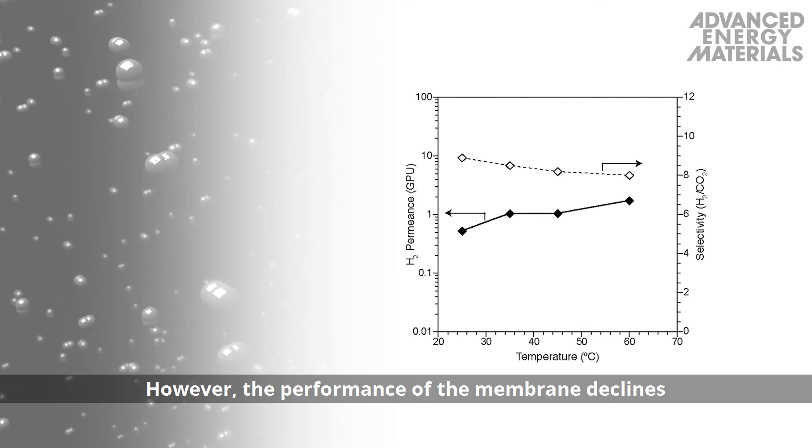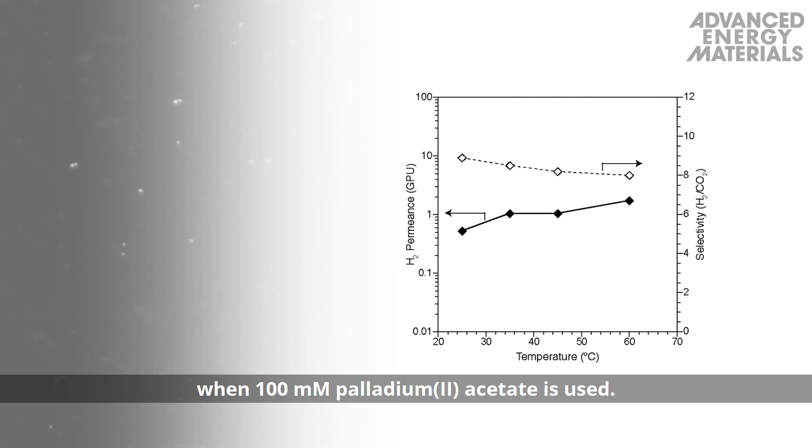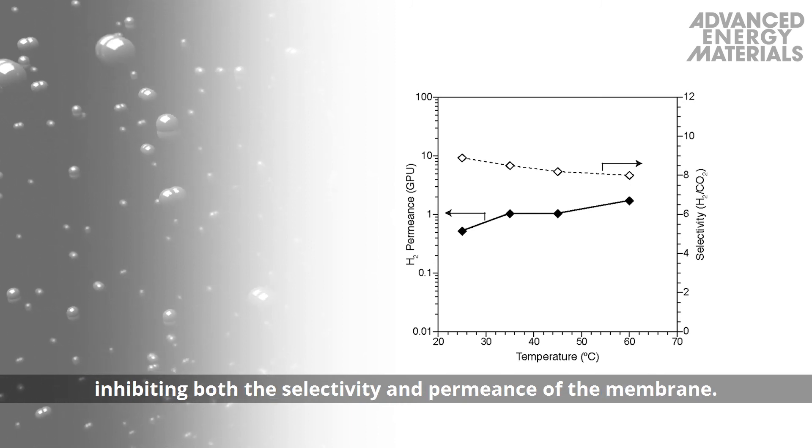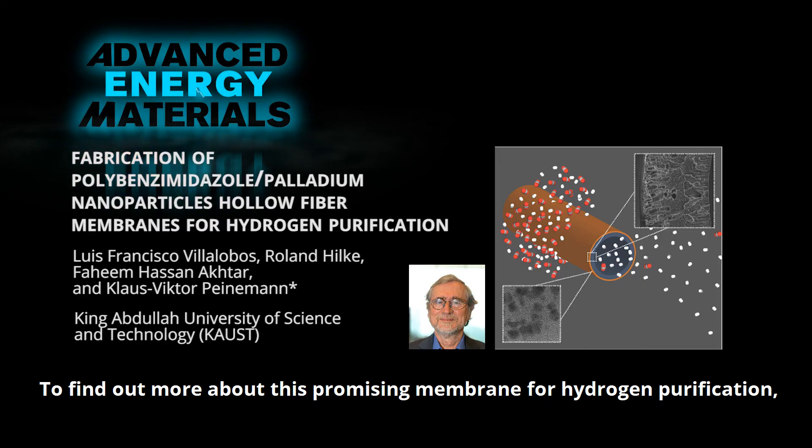However, the performance of the membrane declines when 100 millimolar palladium-2-acetate is used. The higher loading of palladium results in a thicker outer layer, inhibiting both the selectivity and permeance of the membrane.